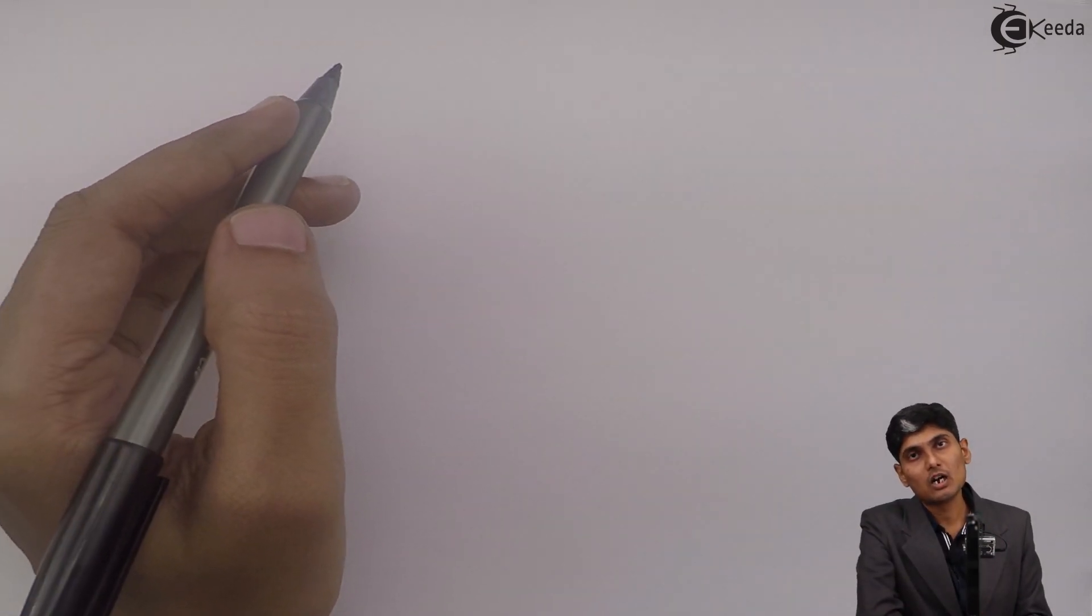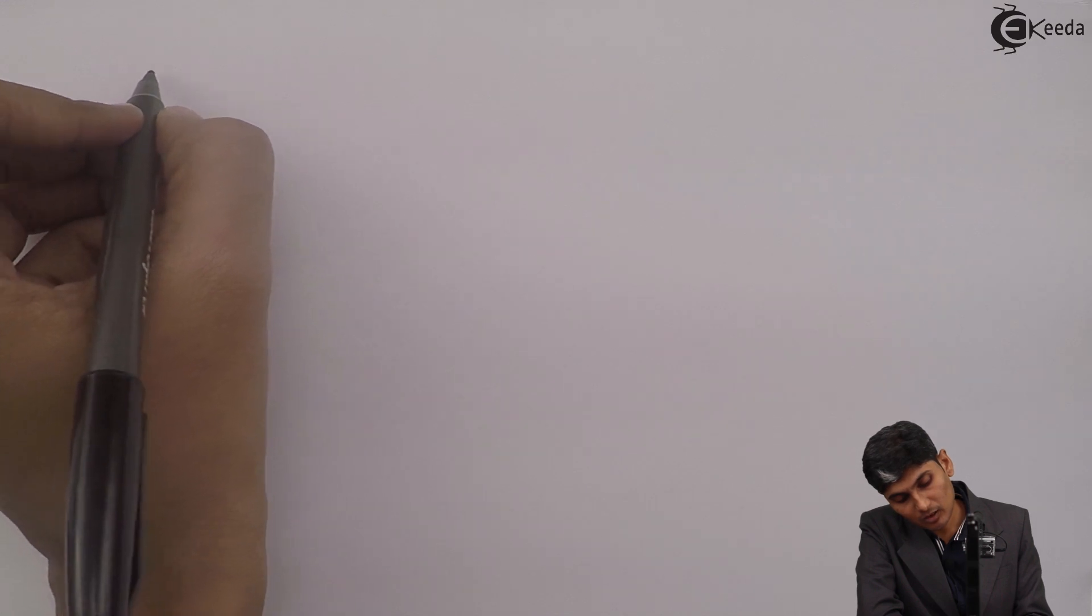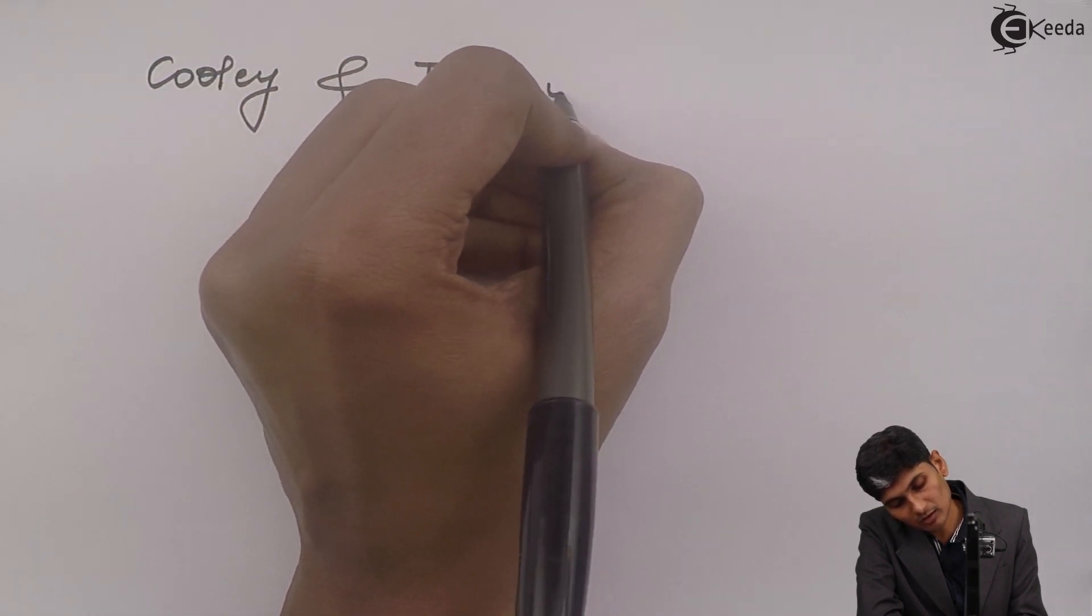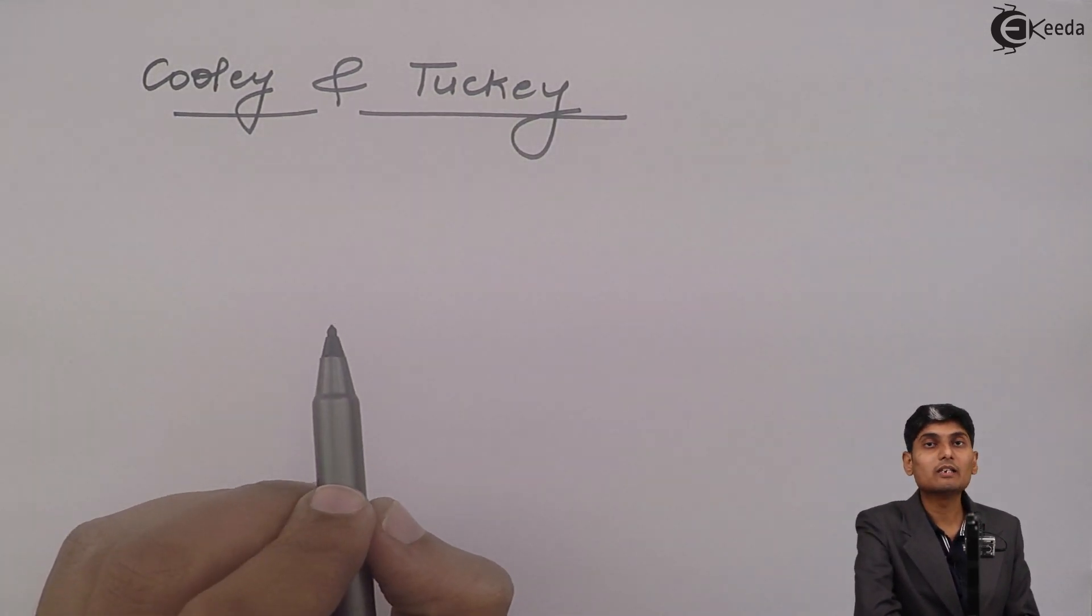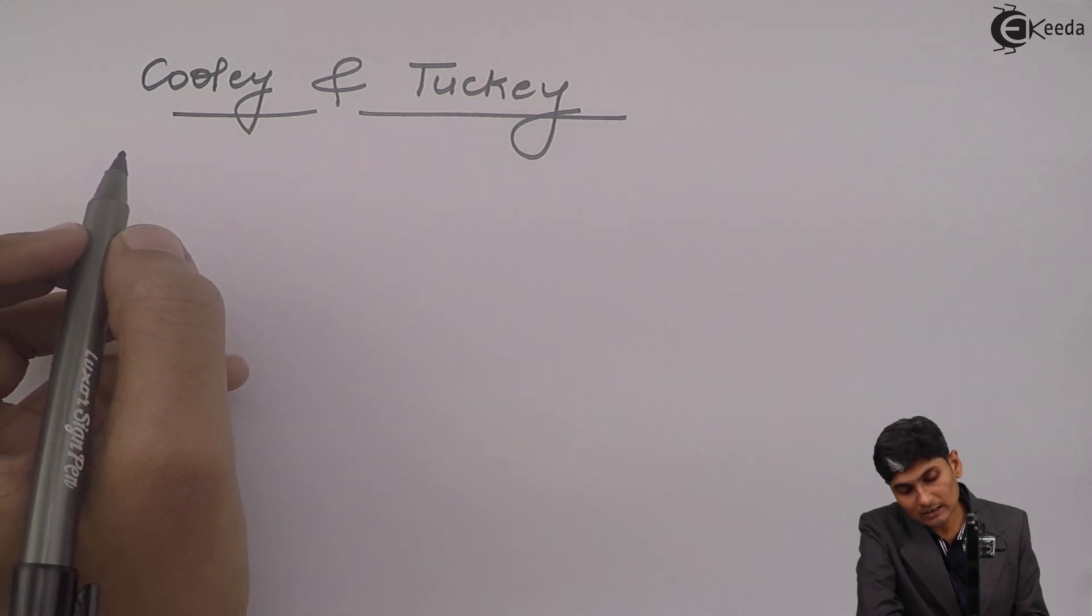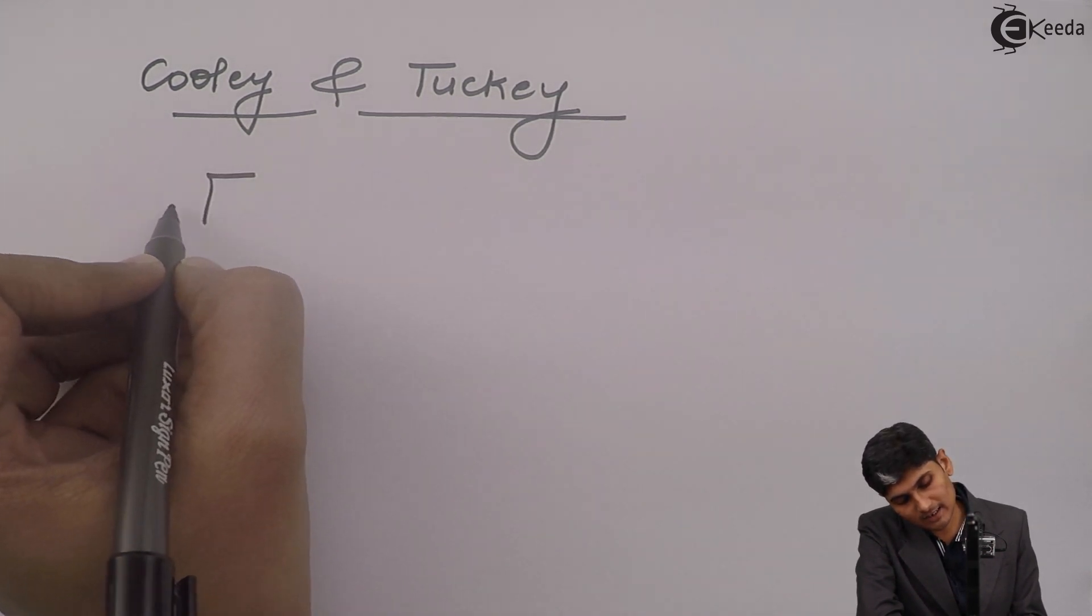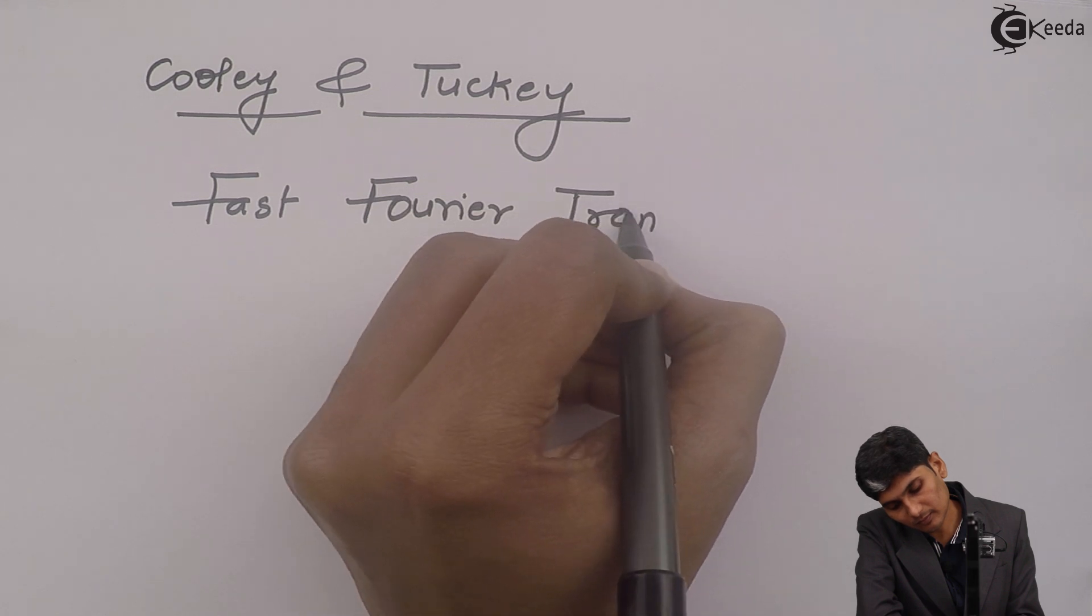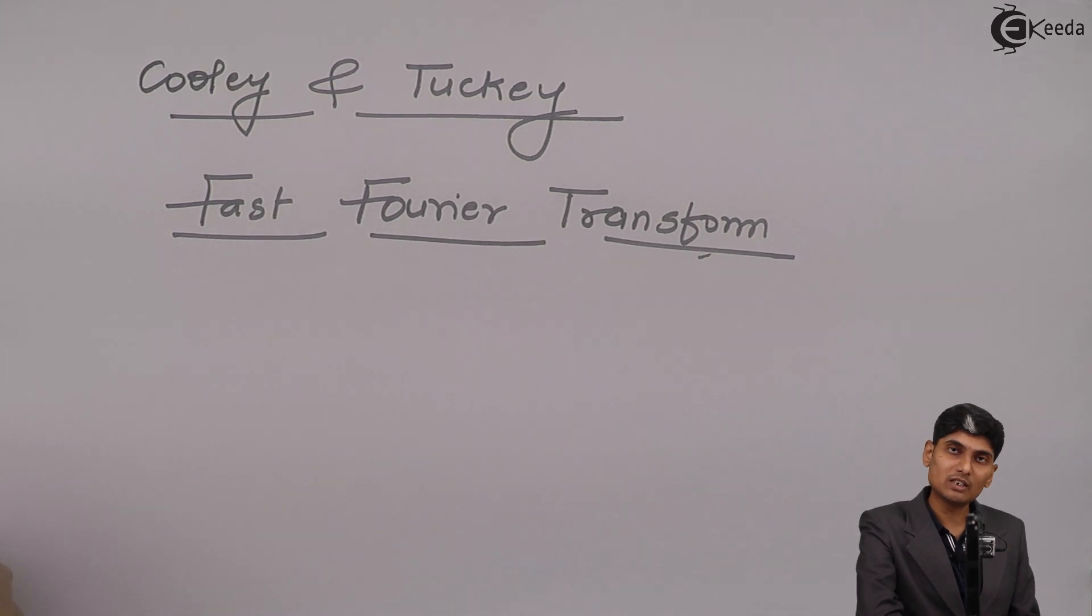So a very brilliant algorithm was devised by two professors whose name was Professor Cooley and Professor Tukey. These two professors have devised a mechanism to calculate the DFT in a faster way. Because this algorithm actually helps us in fast computation of Fourier transform, they are called as Fast Fourier Transform.